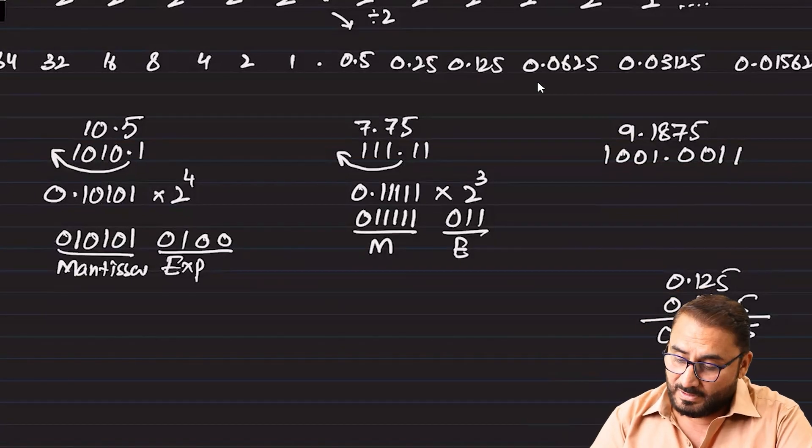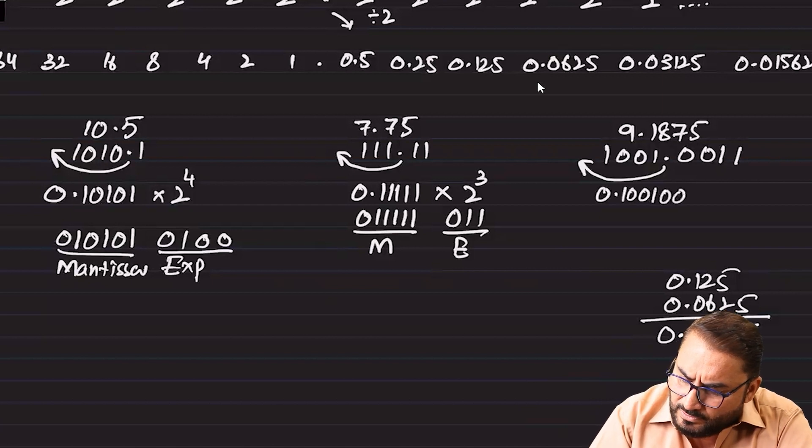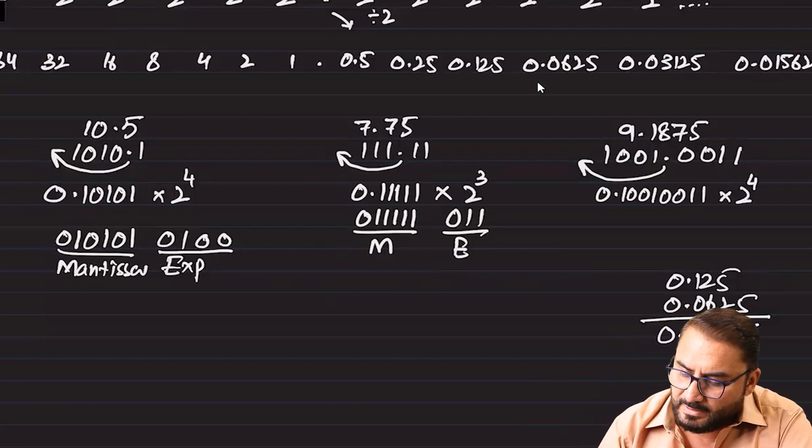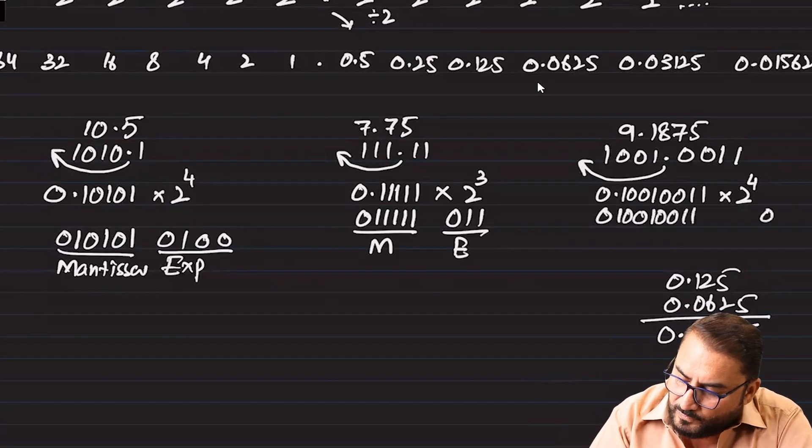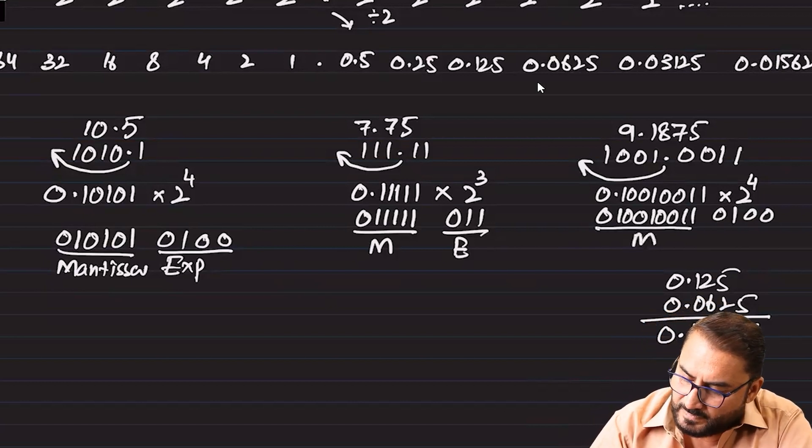Now we have to float the point out towards the left and there is no distinction, there is no exception. Point will always be floated out towards the left, no matter positive number, negative number, positive exponent, negative exponent, whatever that is being formed, the point will be floated out towards the left all the way. So this will become 0.10010011 into 2 to power 4. Now we will save only the exponent and the mantissa, so 010010011 and 4. This is the floating point number. This is mantissa and this is exponent. So that is how we convert it.